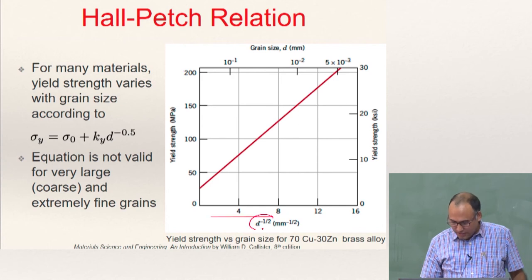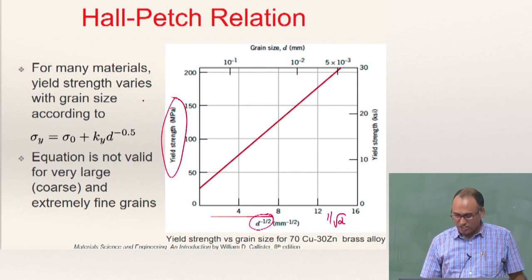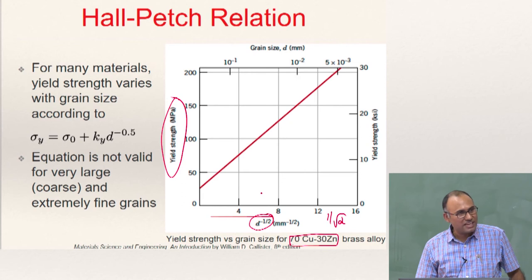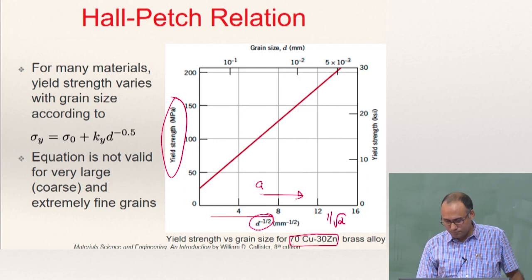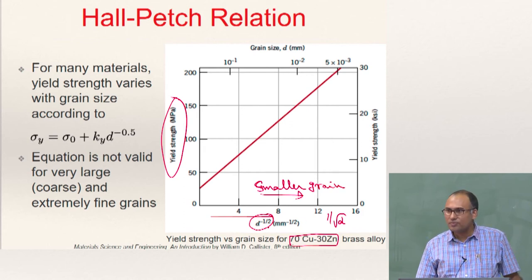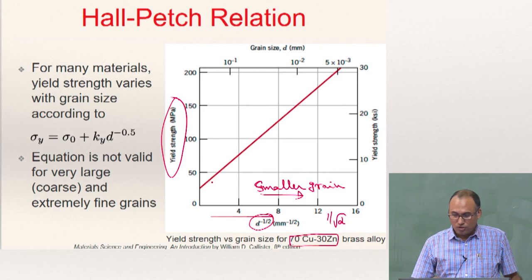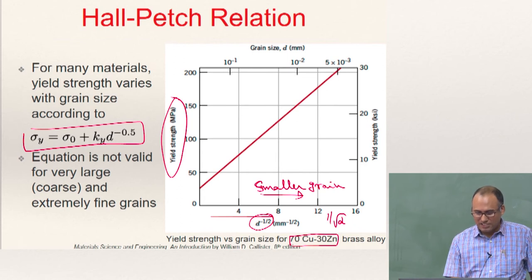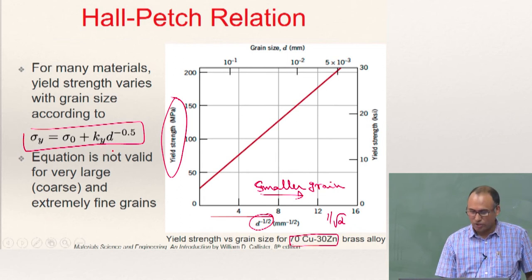This graph shows d to the power of minus one-half, that is 1 over square root of d, as a function of yield strength for a 70% copper, 30% zinc brass alloy. As you reduce the grain size — moving to the right on the x-axis since it is 1 over square root d — your yield strength increases. As you reduce your grain size, the yield strength increases, and the expression for yield strength can be written as: sigma = sigma_0 + k_y divided by root d.